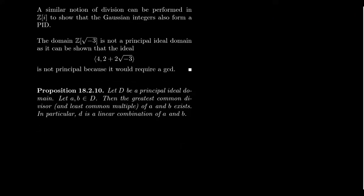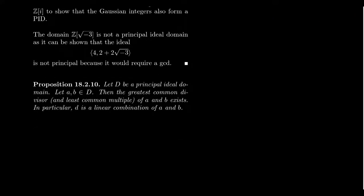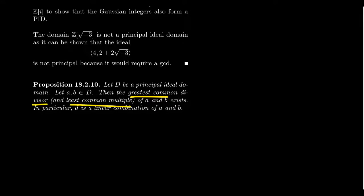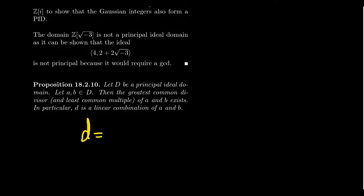Let's mention a proposition about principal ideal domains. Let D be a PID and suppose we have two elements A and B in the domain. Then the greatest common divisor and the least common multiple of A and B exist. In particular, the GCD can be written as a linear combination of A and B. This is a property we used constantly in Math 4220 — that the GCD of two integers can be expressed as a linear combination of the two numbers. The proof of this proposition is left as an exercise.